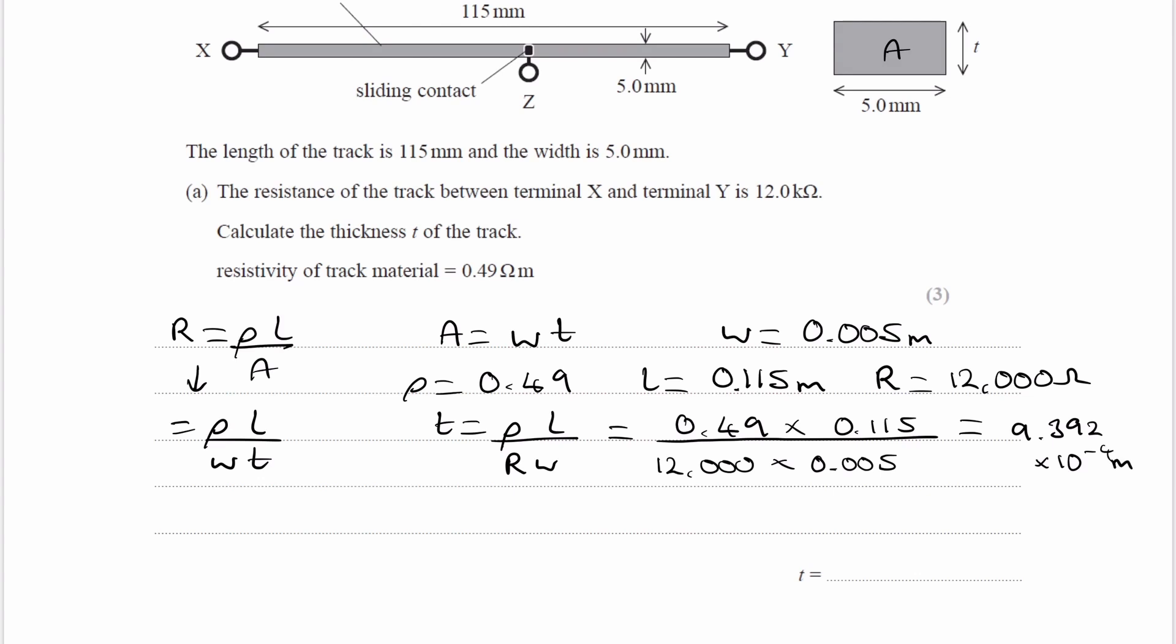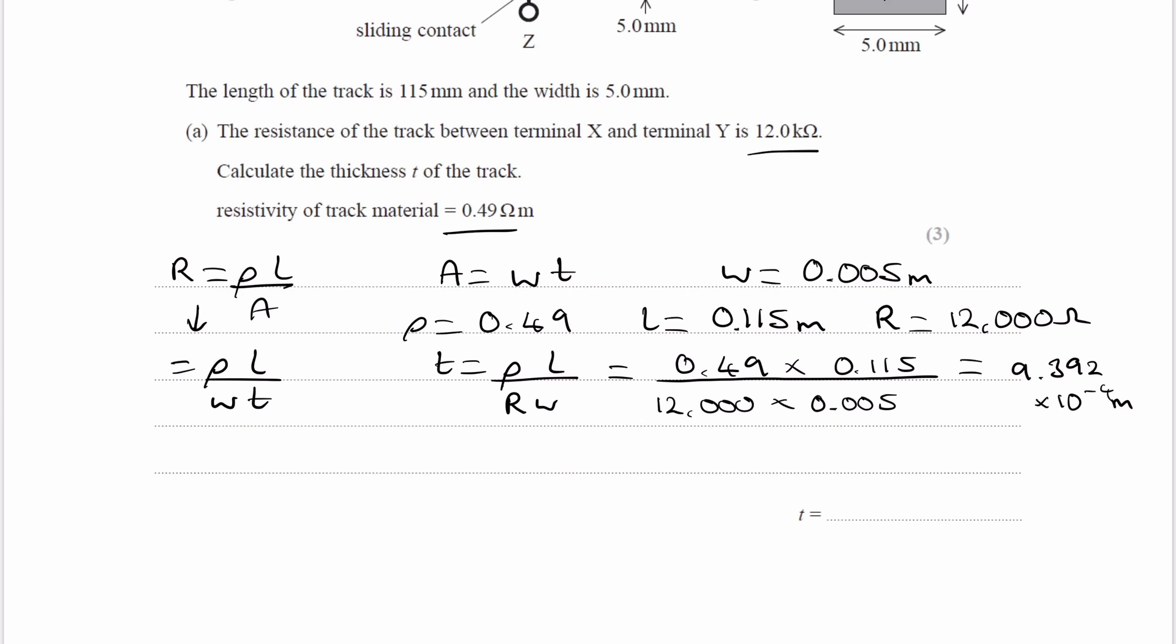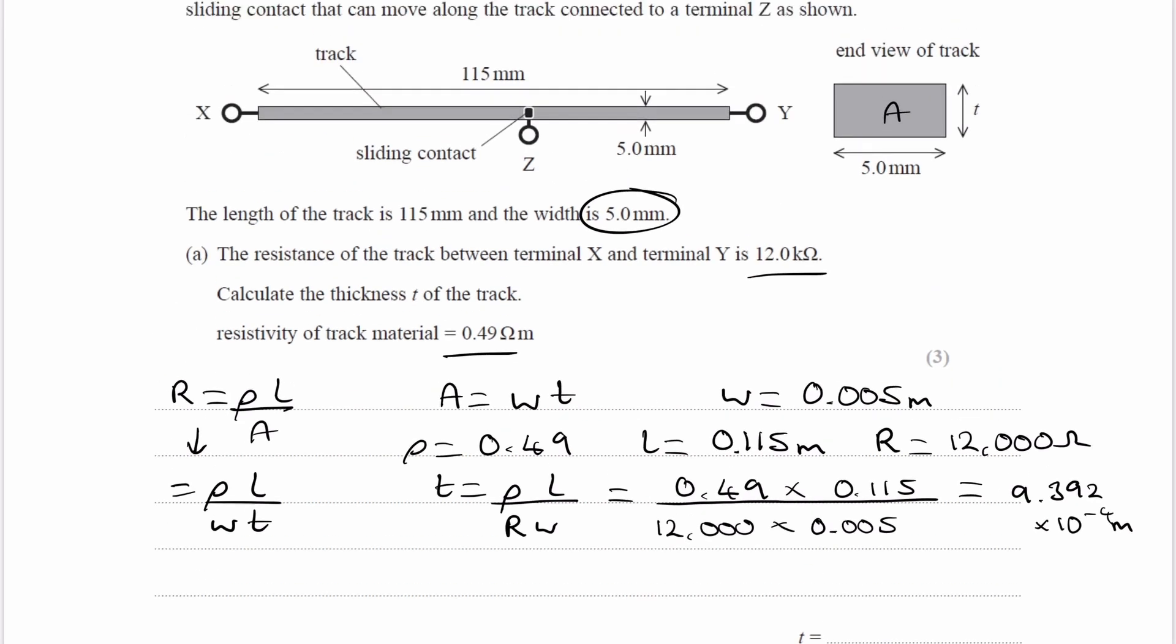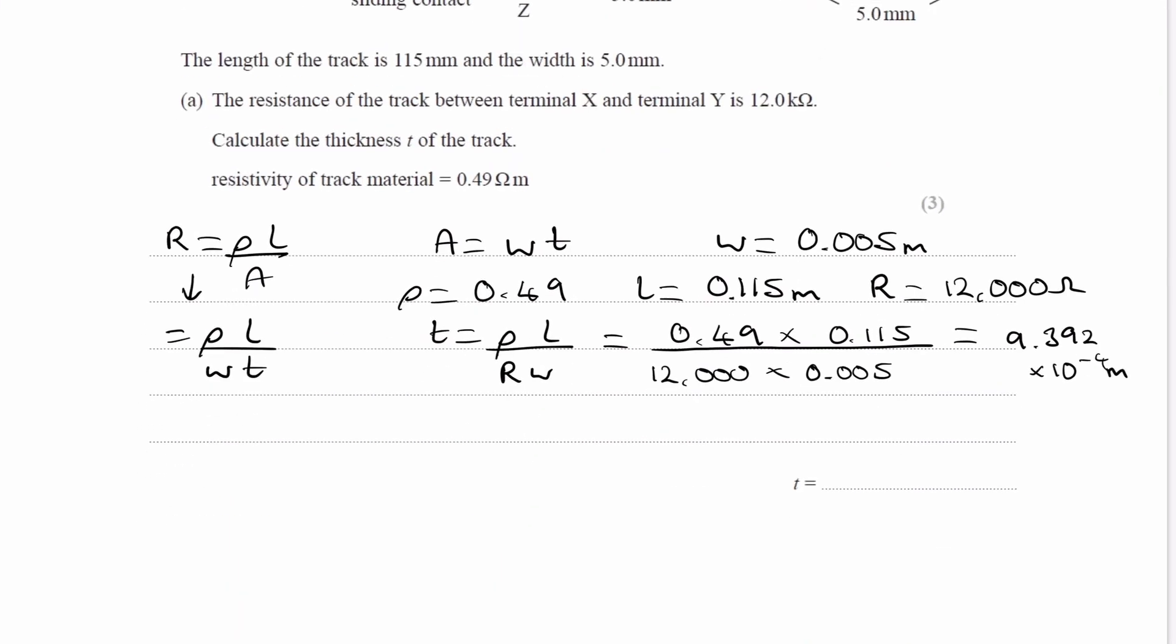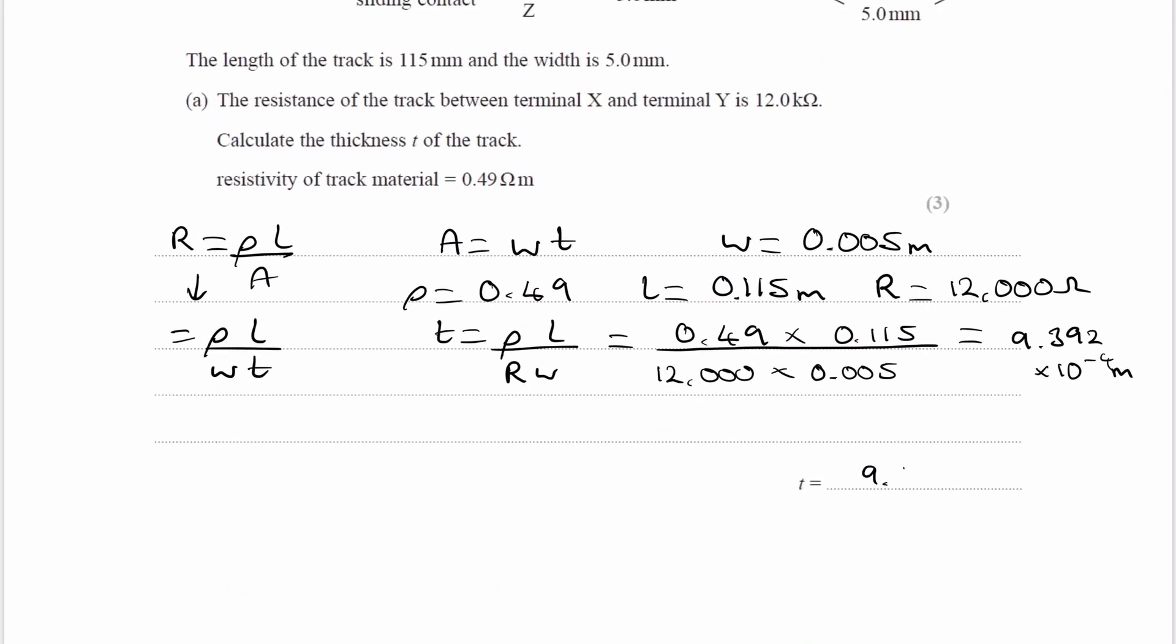The question gives quantities to 2 sig figs, 3 sig figs, 2 sig figs, 3 sig figs. So the lowest is 2 sig figs. Let's give our answer to 2 sig figs as well: 9.4 times 10 to the minus 4 meters. That's part A done.